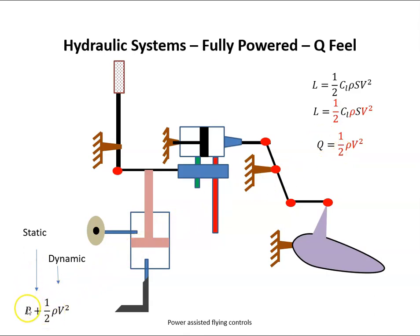Pressure is made up of static pressure and dynamic pressure. If we feed the static port into some sort of chamber and the dynamic from the pitot going in here, the faster we go, the greater the dynamic pressure. It might act on this piston here.